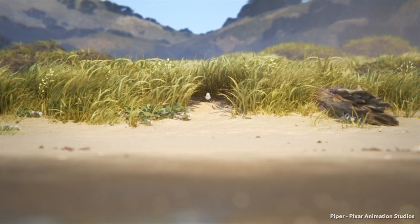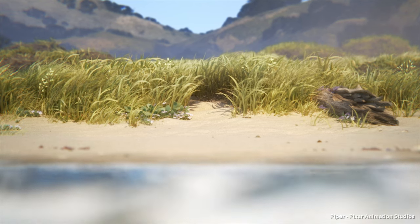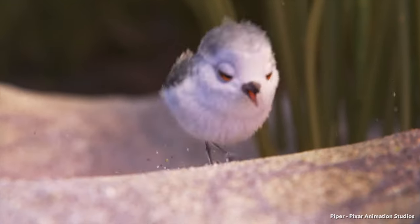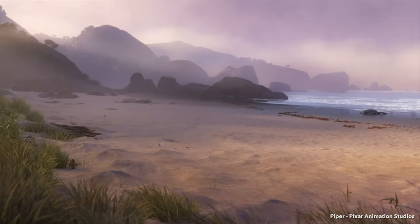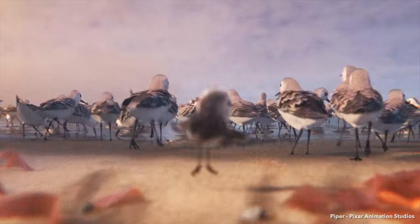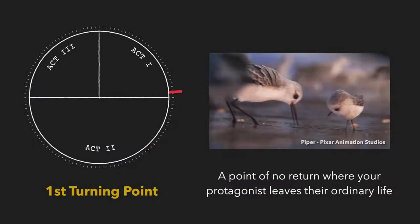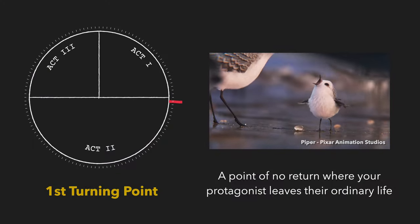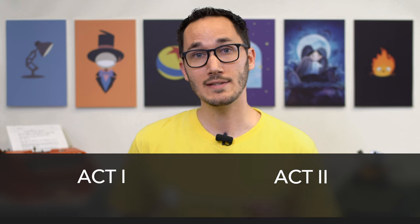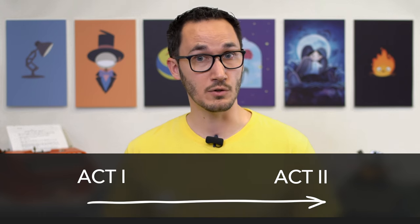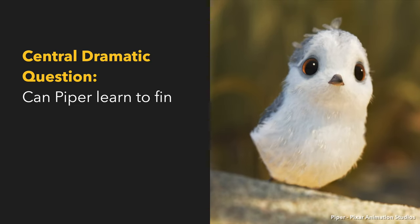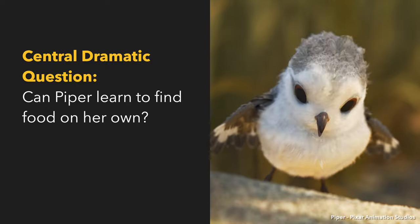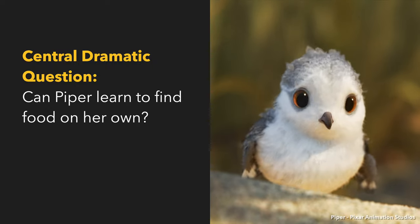But as we all know, in a good story, change is inevitable. Piper is forced to confront her fears, and her craving for food pushes her to join the flock. This moment marks the first turning point — a point of no return where your protagonist leaves their ordinary life. This is the passage from Act 1 to Act 2, and creates a central dramatic question: Can Piper learn to find food on her own?